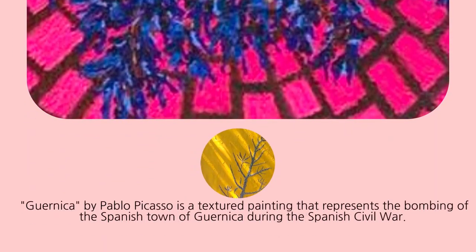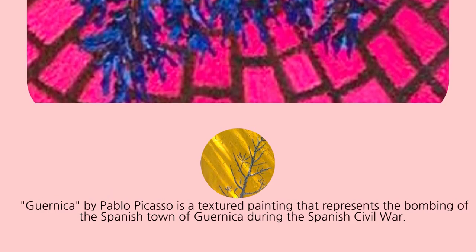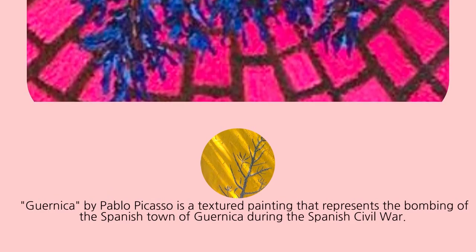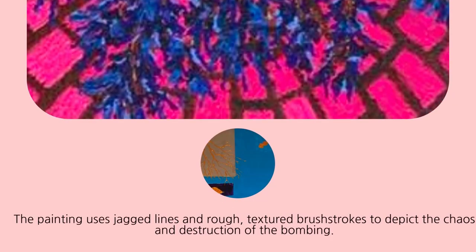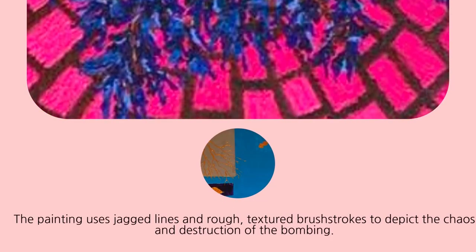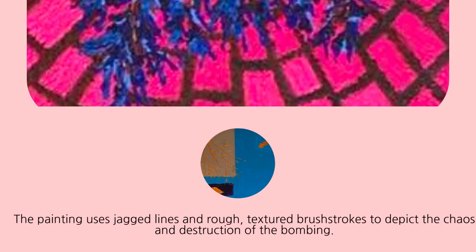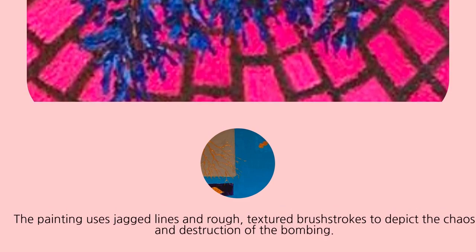Next is Pablo Picasso's Guernica, a textured painting that represents the bombing of the Spanish town of Guernica during the Spanish Civil War. The painting uses jagged lines and rough textured brushstrokes to depict the chaos and destruction of the bombing.